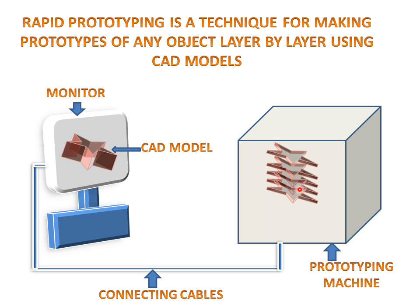By layering this model, the final product will be made by this prototyping machine. In the rapid prototyping process, we make any object layer by layer using the CAD model, building a 3D object layer by layer and fusing the layers together by different means.